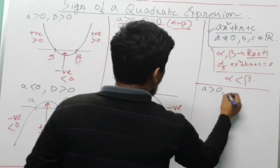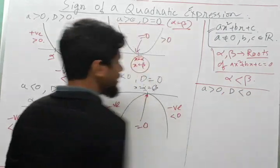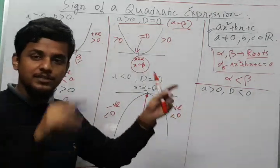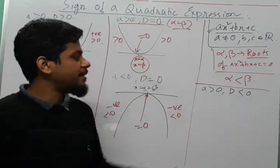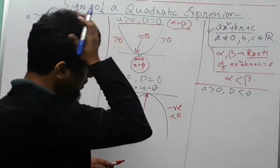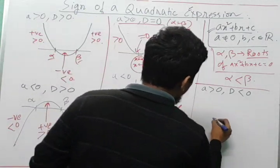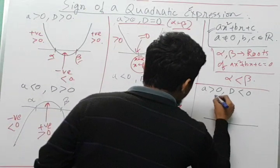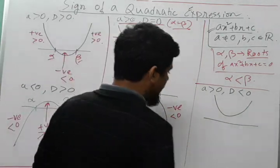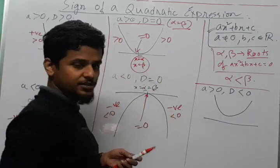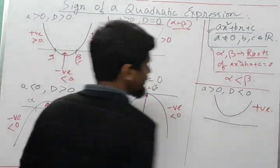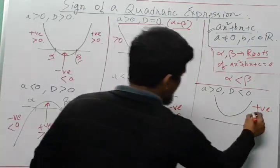Now we'll understand what happens when a is greater than 0 and D is less than 0. Since a is greater than 0, the parabola is opening upwards, and D less than 0 means it does not touch or intersect the x-axis at all. So the curve will look somewhat like this — floating entirely above the x-axis. As you can see, for any value of x, the quadratic expression is always positive — not equal to 0, but always strictly positive.